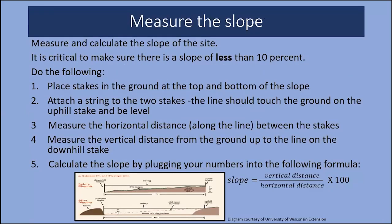Measure and calculate the slope of your site — less than 10% is important, with 7% slope being ideal. Place stakes at the top and bottom of your rain garden, attach a string touching the ground on the uphill stake and level as it reaches the downhill stake. Measure the horizontal distance along the line between stakes, and the vertical distance from the ground to the line on the downhill side. Calculate slope using the formula: slope equals vertical distance divided by horizontal distance, times 100.